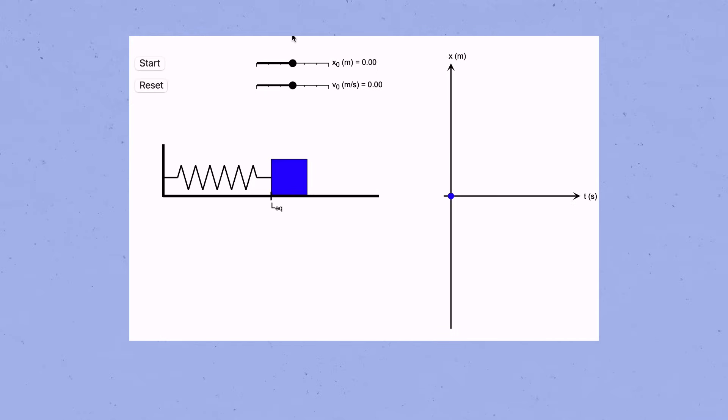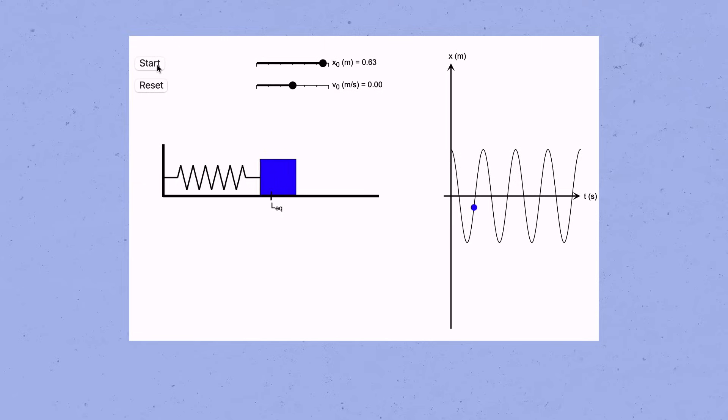Here's an animation I made that you can play with to see how this works. Just drag the sliders to choose the initial position and velocity that you want for the block, and then press start to see what its position versus time graph is going to look like. I'll put a link to that too in the description, and you can play around with it for yourself.